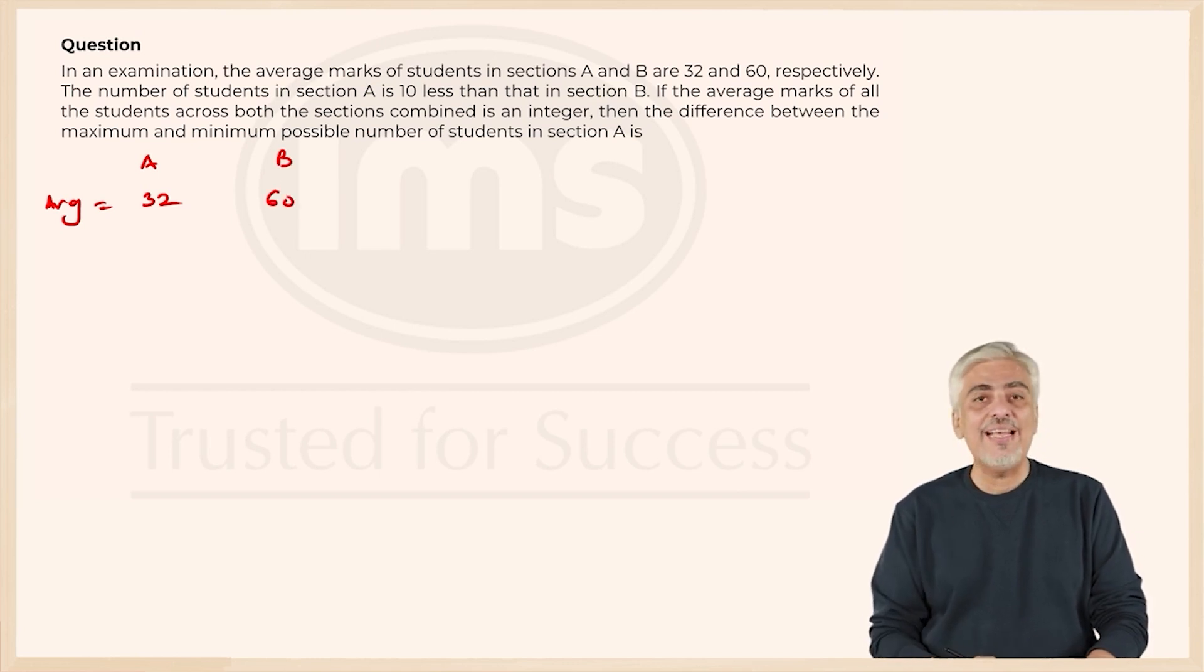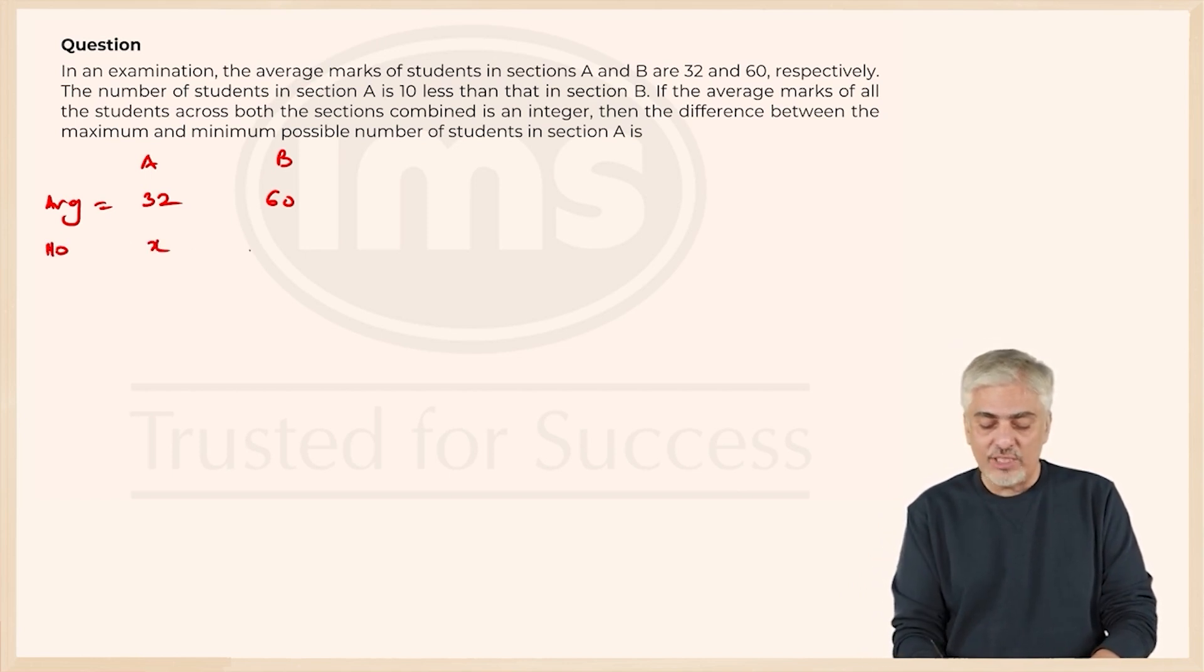The number of students in section A is 10 less than the number of students in section B. So if I start with number of students as x over here, here it is x plus 10. Till here it was pretty straightforward.